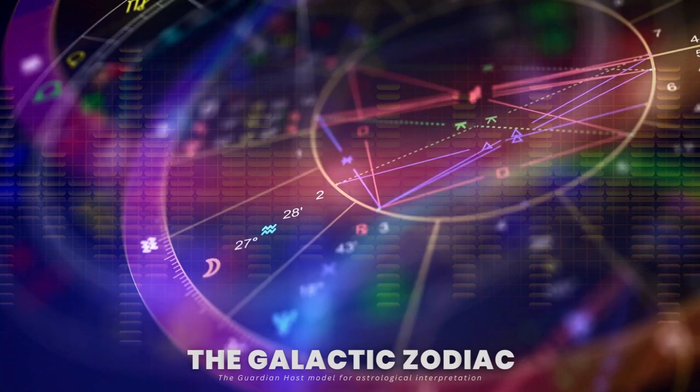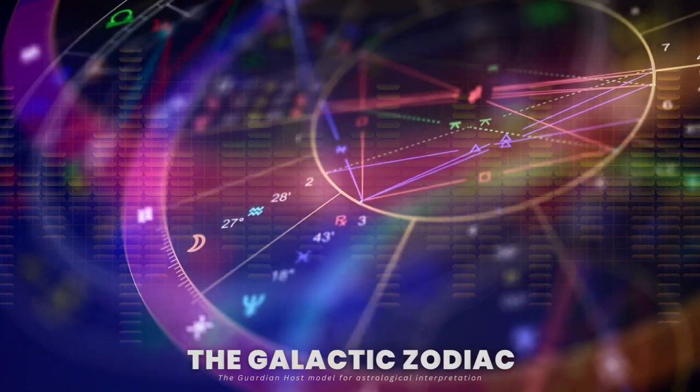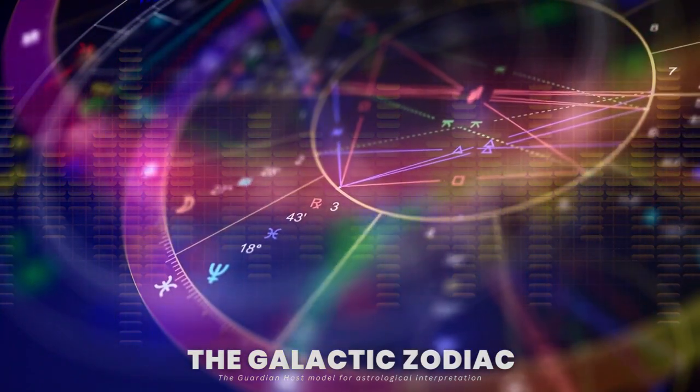Aries: April 19th to May 13th. Its themes are purification and calcination. Its element is fire.